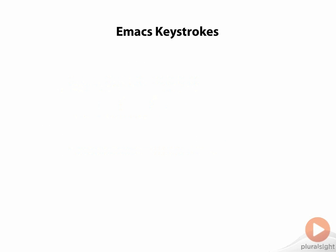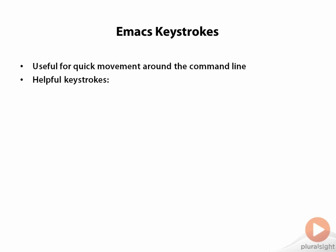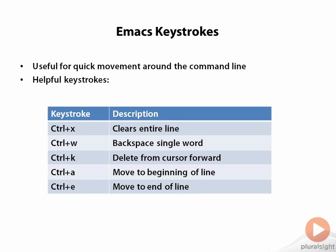Sometimes you'll want to learn some more shortcuts — little helpful hints that make working in the command line a bit easier. Control X will delete everything you had typed on the line up to that point. Control W will backspace a whole word at a time. Control K will erase from the cursor forward. Control A moves you to the beginning of the line, and Control E moves you to the end of the line.